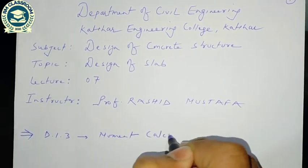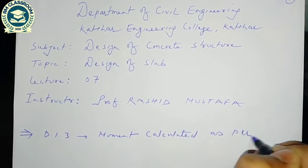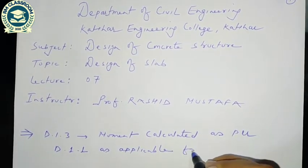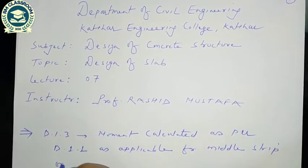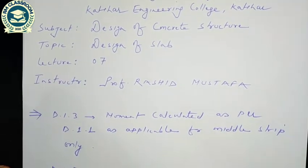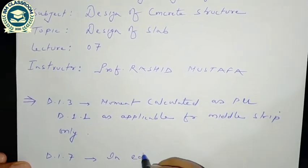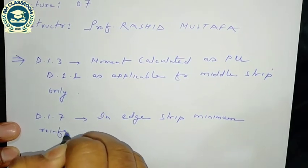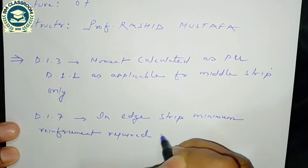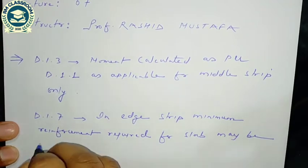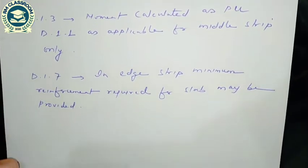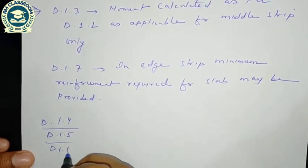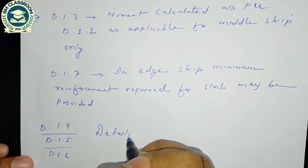As per clause D.1.1, the moment calculated is applicable for the middle strip only. Similarly, D.1.7 says in the edge strip, minimum reinforcement required for the slab may be provided. Clauses D.1.4, D.1.5, and D.1.6 deal with the detailing of reinforcement.